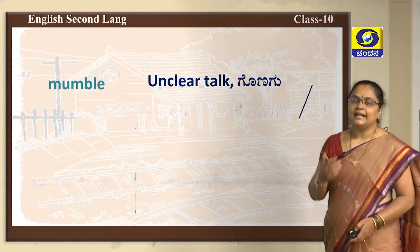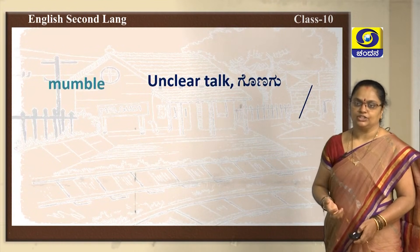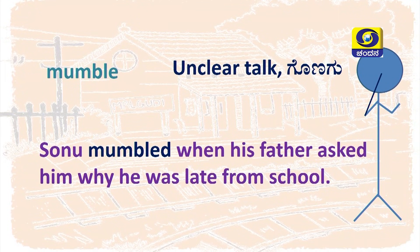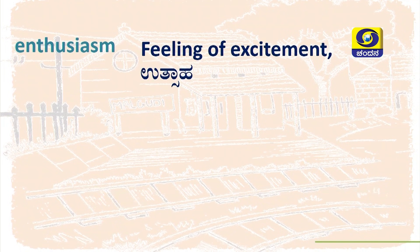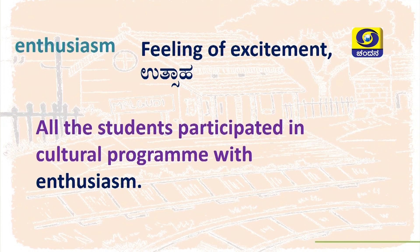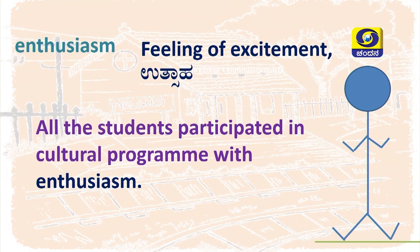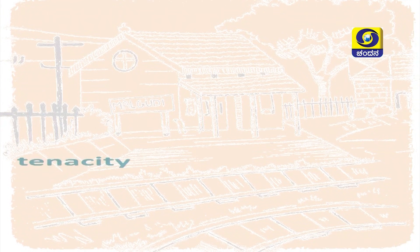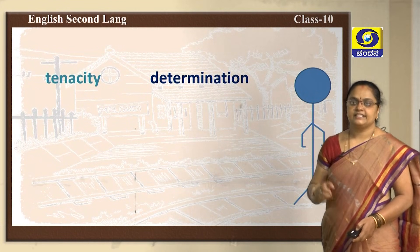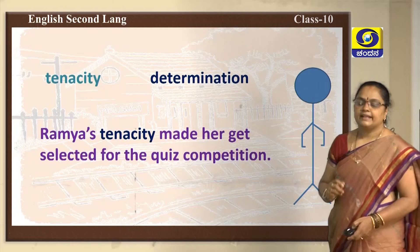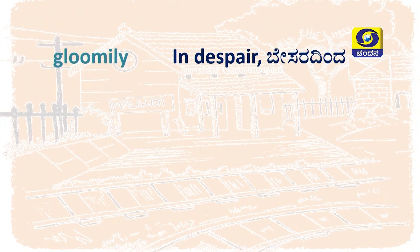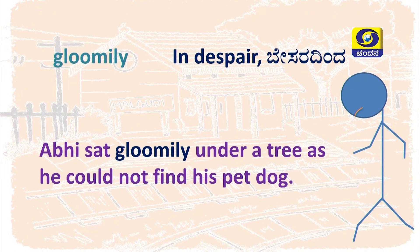'Enthusiasm' means feeling of excitement. For example: all the students participated in the cultural program with enthusiasm. 'Tenacity' means determination. For example: Ramya's tenacity made her get selected for the quiz competition. 'Gloomily' means in despair. For example: Abhi sat gloomily under a tree as he could not find his pet dog.